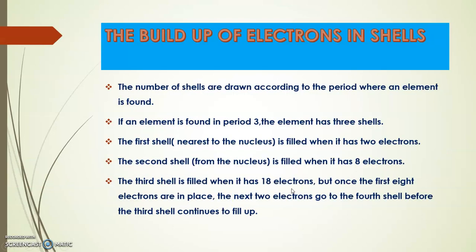In the previous lesson, we had actually looked at the periods, as well as the groups that are found on the periodic table. So now we had to say that the number of shells are drawn according to the period where an element is found. So if an element is found in period 3, the element will have 3 shells. The first shell is filled when it has 2 electrons. The second shell from the nucleus is filled when it has 8 electrons. The third shell is filled when it has 18 electrons, but once the first 8 electrons are in place, the next 2 electrons go to the 4th shell before the third shell continues to fill up.